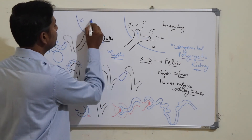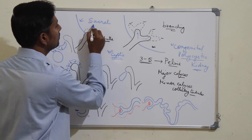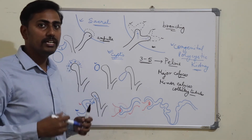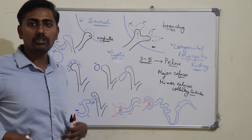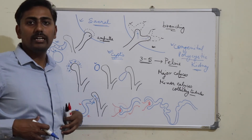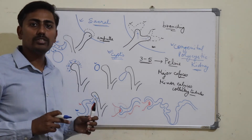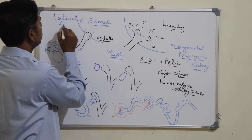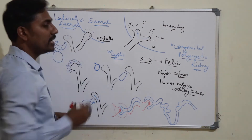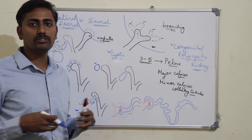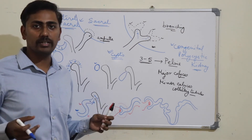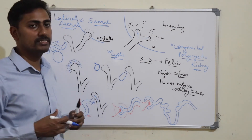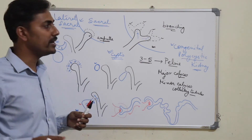Now the ascent of the kidney. Since the metanephros was present in the sacral region, the kidneys have to ascend up to the lumbar region. This is due to the differential growth of the abdominal wall. The metanephros initially takes blood supply from the lateral sacral arteries, but with the ascent of the kidney, higher branches of the abdominal aorta take over — namely the renal arteries in the lumbar region. Sometimes these lateral sacral branches remain and are known as aberrant renal arteries.